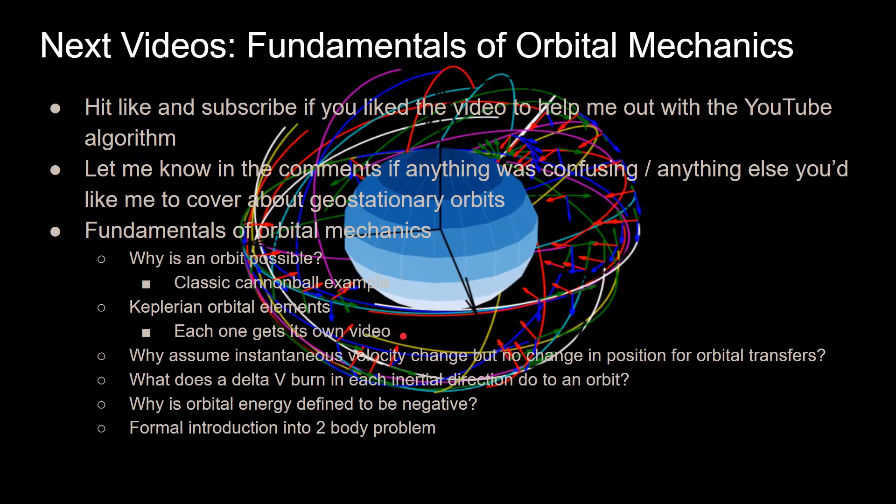Here are a few examples of what those things are. One of the big things is why is an orbit even possible? Why is it important to have velocity that is tangent to your position vector? Also the Keplerian orbital elements, I've gone over them very briefly in a few different cases. I want to go over them in a more formal and concrete way to give a better understanding of them.